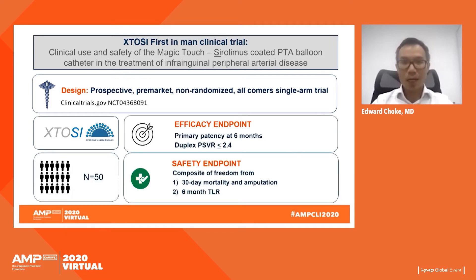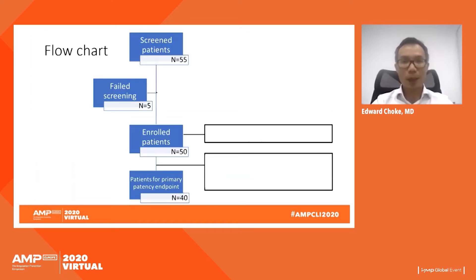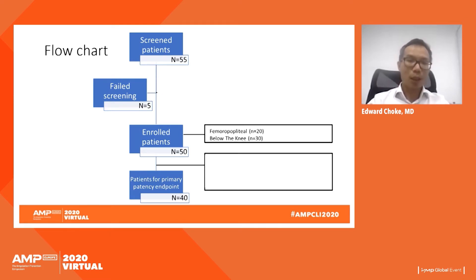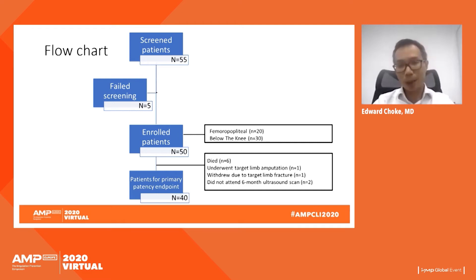50 patients were recruited. The efficacy endpoint was primary patency at six months, assessed by duplex peak systolic velocity ratio ≤2.4. The safety endpoint was a composite of freedom from 30-day mortality and amputation, and freedom from six-month target lesion revascularization. 55 patients were screened; five failed screening. Of the 50 enrolled — 20 femoral-popliteal and 30 below-the-knee — 40 reached the primary patency endpoint at six months. Six had died, one underwent target limb amputation, one withdrew due to target limb fracture, and two missed their six-month ultrasound.